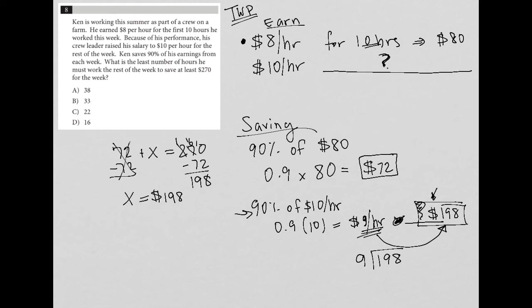9 goes into 19 twice. That 2 times 9 is 18. 19 minus 18 is 1. Bring down the 8. It's 18 again. So that makes this a 2 here, which means it was 22 hours. So those 22 hours basically made him an additional $220, which is not important for this question. And out of that, he saved $198.